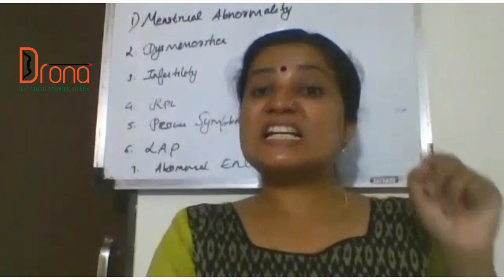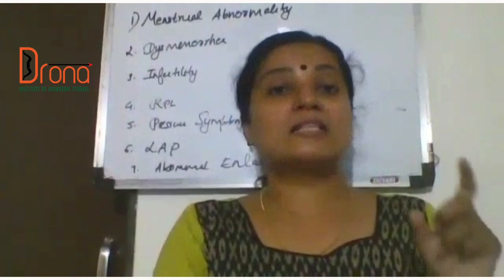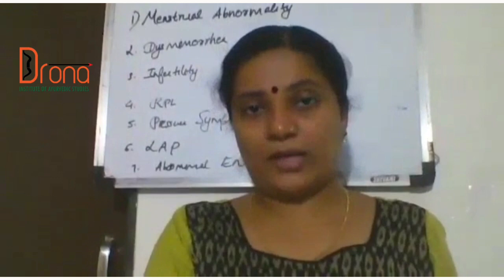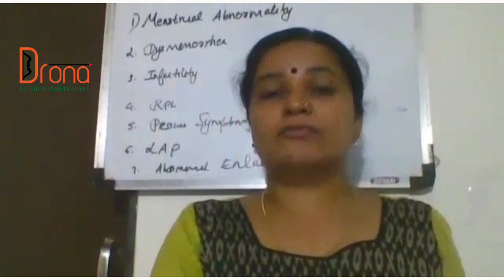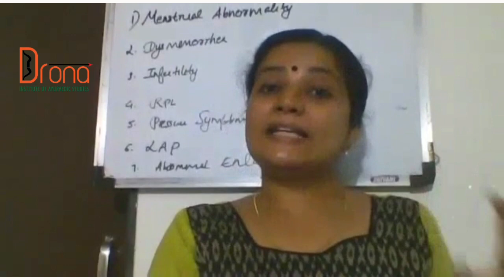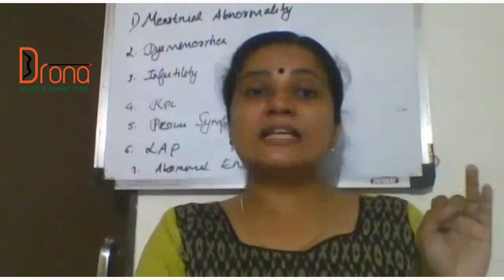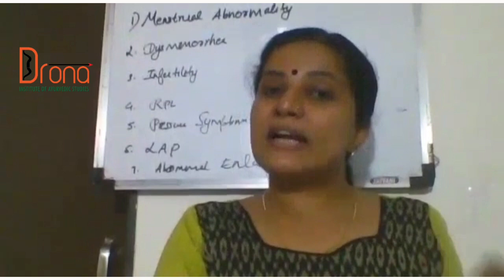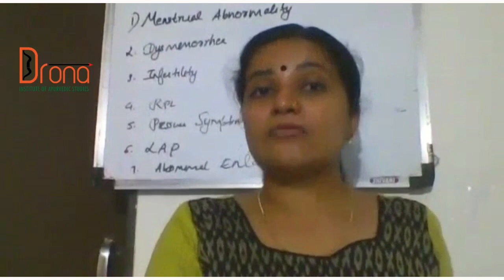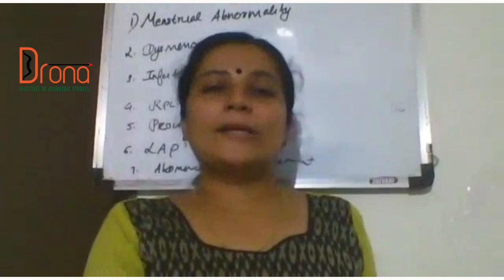Then coming to red degeneration — red degeneration is mainly seen during the second half of pregnancy and also during the time of the puerperium. These are the main degenerations seen in the case of fibroid: hyaline, cystic, fatty, calcific (with womb stone), and red degeneration.